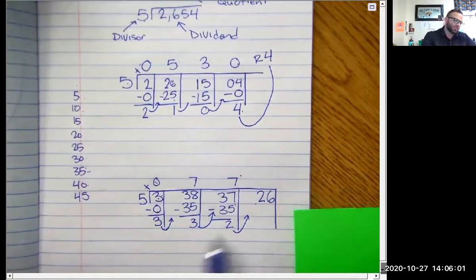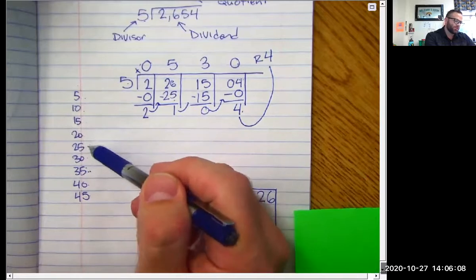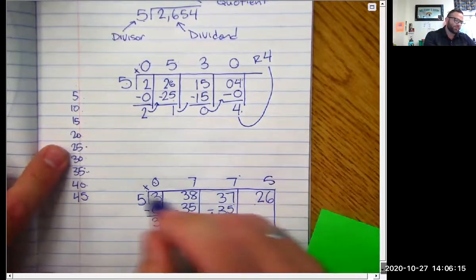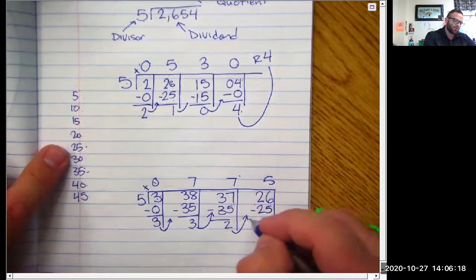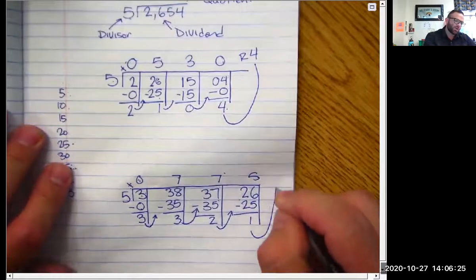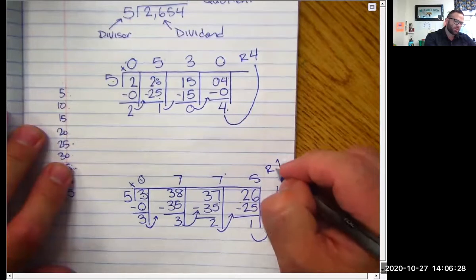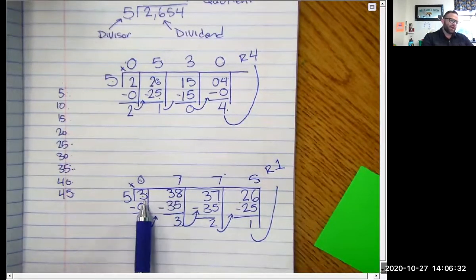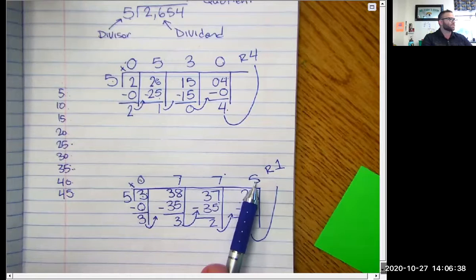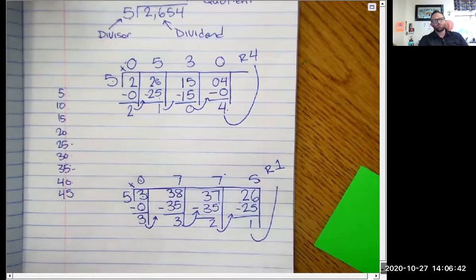How many times can I subtract five from 26 without going over? Five times — it looks like you could go six, but that would be over. Five times five is exactly 25. When I subtract them I have one left. There's nowhere else to move this number, so this becomes our remainder. I could subtract five from 3,876 exactly 775 times, with one left over. Not that difficult!